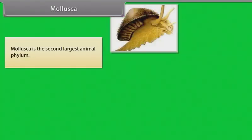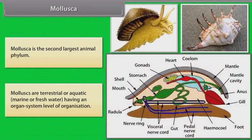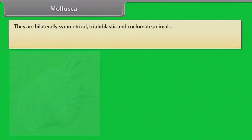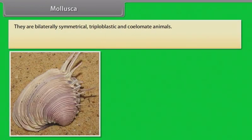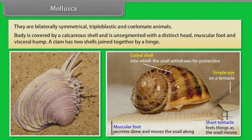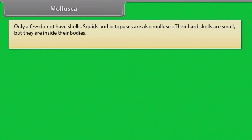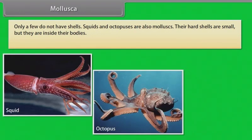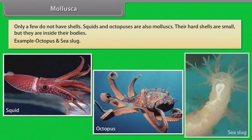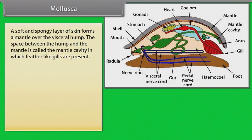Mollusca is the second largest animal phylum. Molluscs are terrestrial or aquatic — marine or freshwater — having an organ system level of organization. They are bilaterally symmetrical, triploblastic and coelomate animals. The body is covered by a calcareous shell and is unsegmented with a distinct head, muscular foot and visceral hump. A clam has two shells joined together by a hinge; only a few molluscs do not have shells. Squids and octopuses are also molluscs — their hard shells are small and inside their bodies. A soft and spongy layer of skin forms a mantle over the visceral hump, and the space between the hump and the mantle is called the mantle cavity, in which feather-like gills are present.